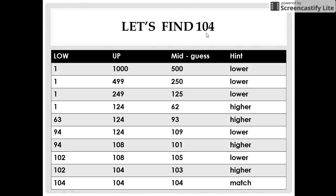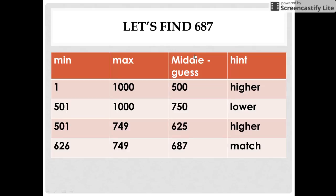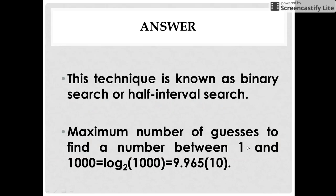To guess 104 it took us exactly 10 guesses and to find 687 we guessed it on our fourth guess. So the maximum number of guesses required are 10 and the minimum number of guesses required is 1.